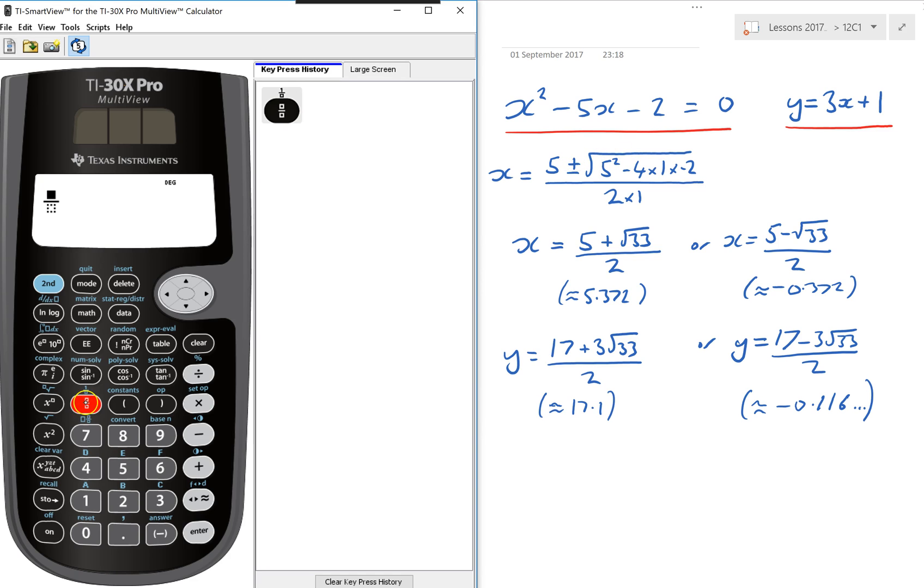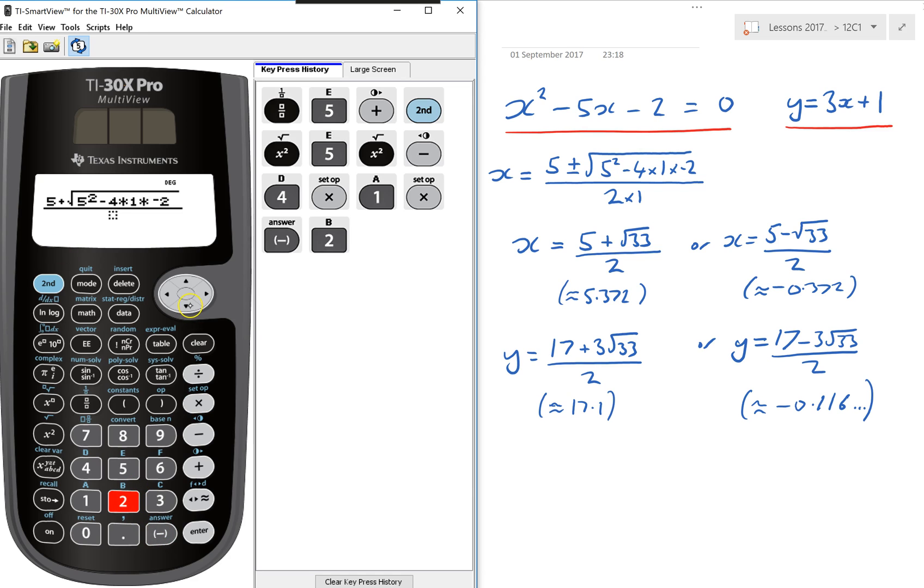So I'll do it here on a fraction. So I want 5, I have to put plus to start with the square root of 5 squared, or technically negative 5 all squared, minus 4 times by 1 times by negative 2. And that's all over 2a, or 2 times 1.